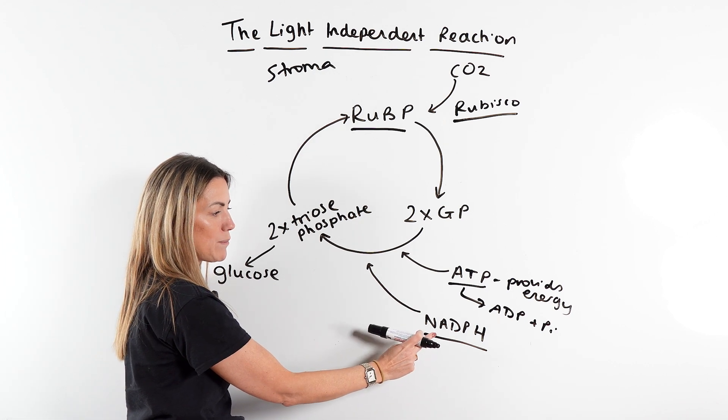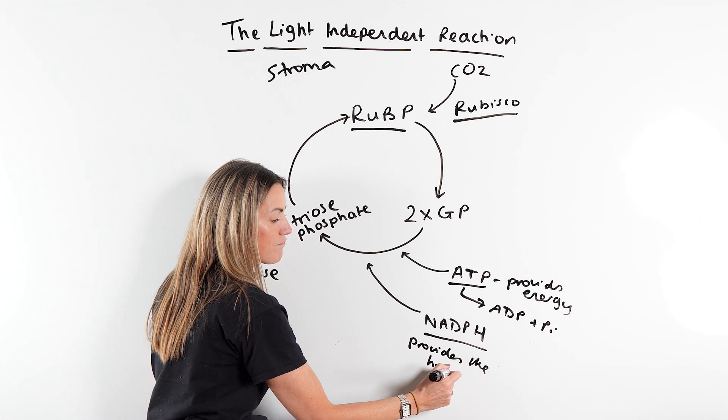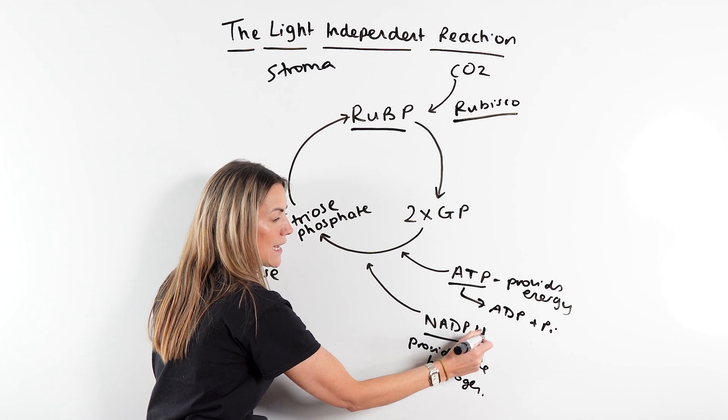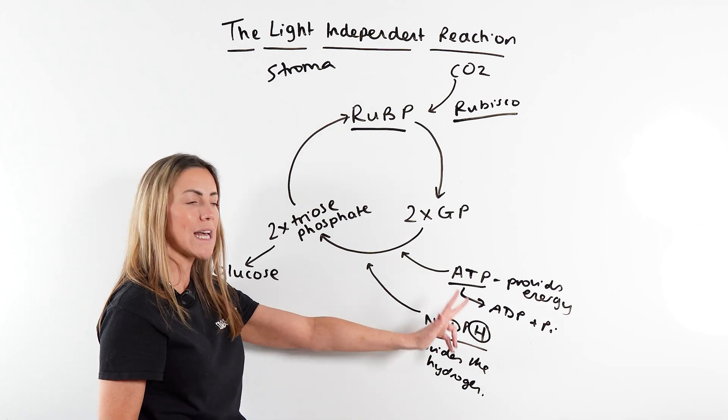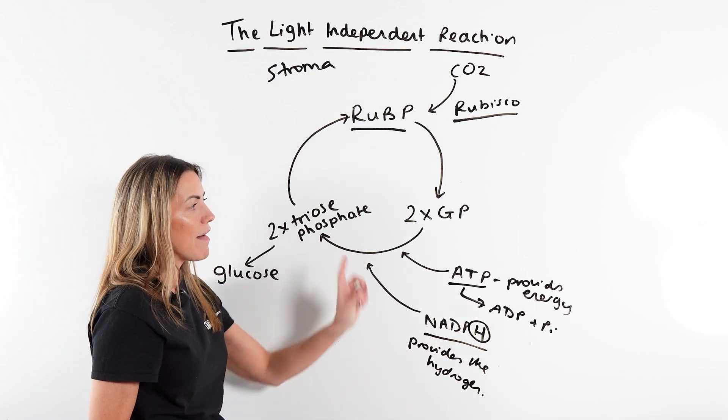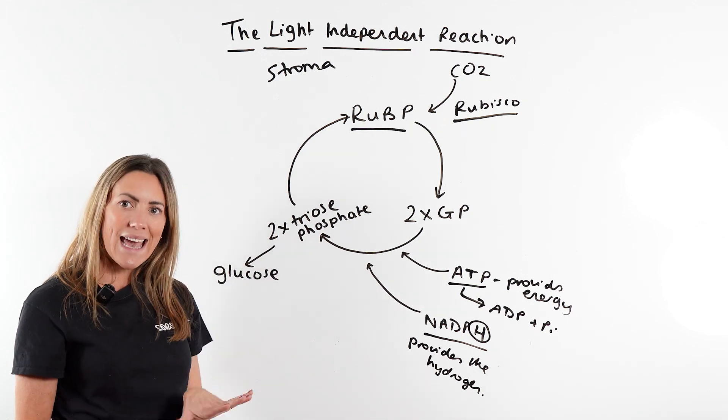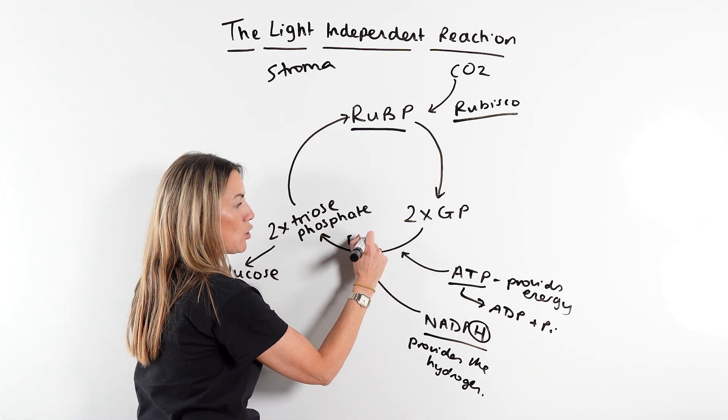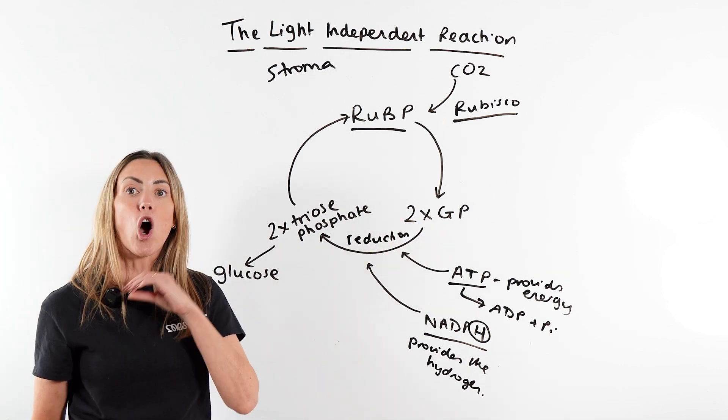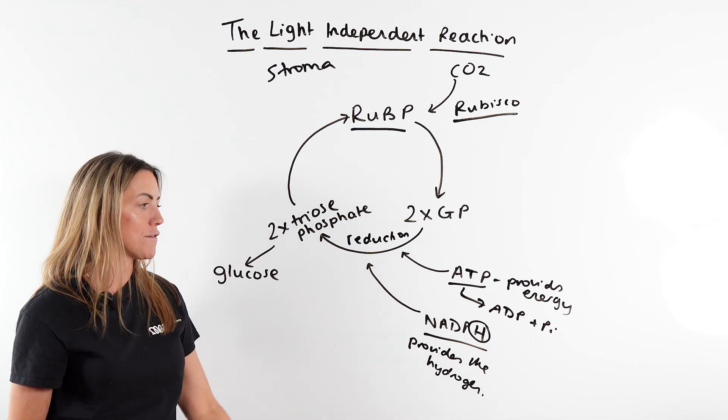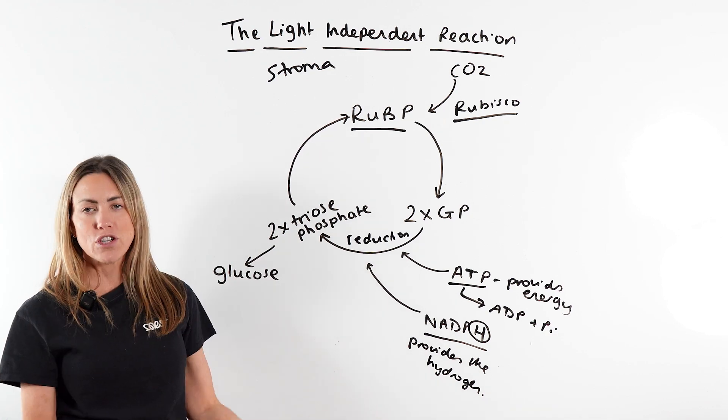Why do we need the NADPH? Well NADPH provides the hydrogen here. So NADPH is oxidized, it's going to lose hydrogen, and the GPs are going to be reduced to triose phosphate because they gain hydrogen. So it's really important we remember this is reduction and we say that the two molecules of GP are reduced into two triose phosphates using NADPH or reduced NADP.